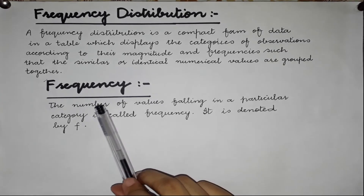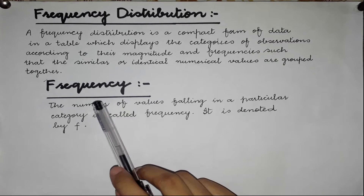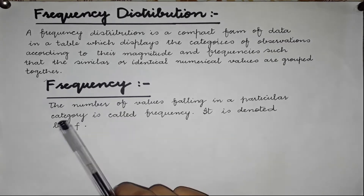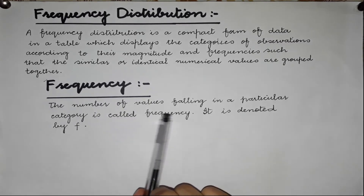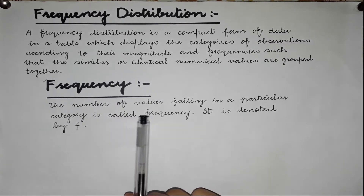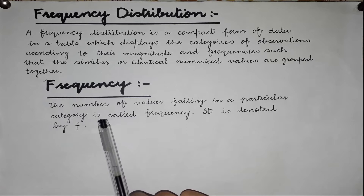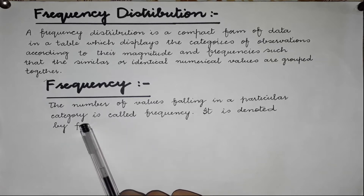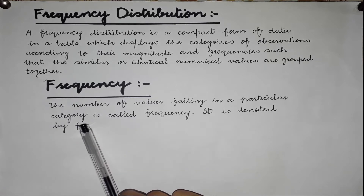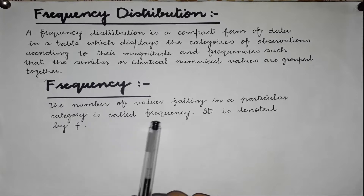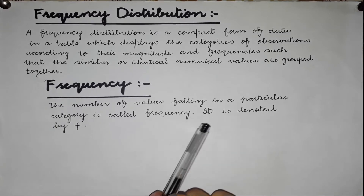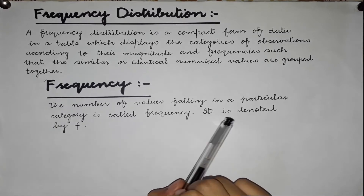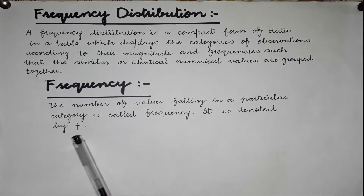Now there is a term called Frequency. This is the number of values falling in a particular category — the number of values falling in a particular category — and it is denoted by F.